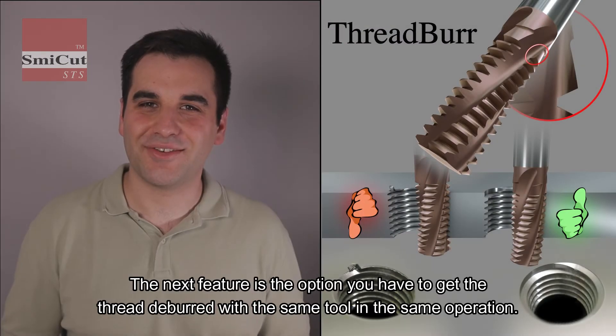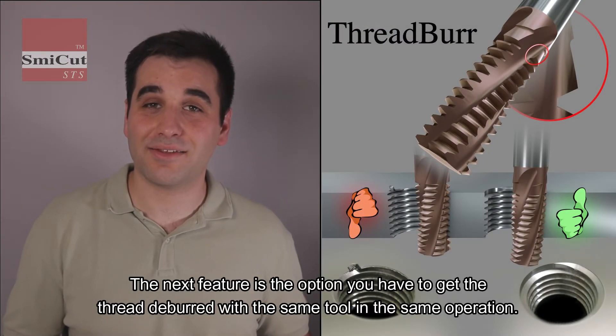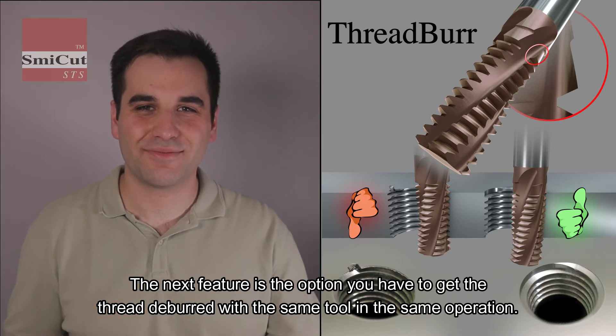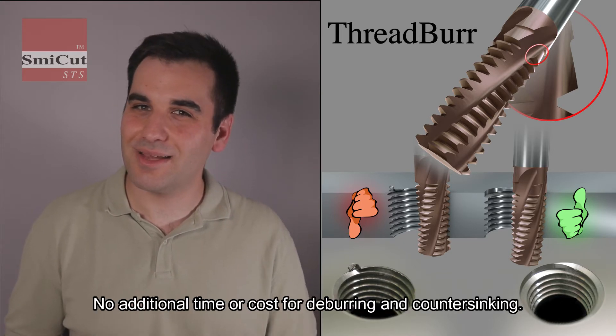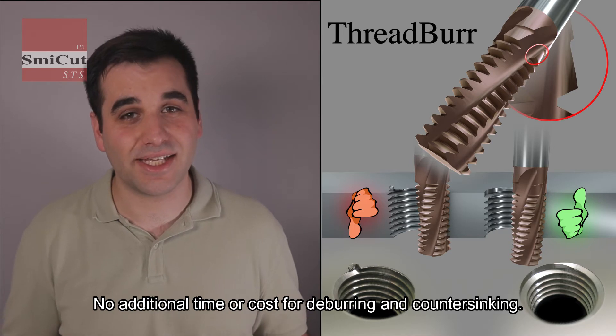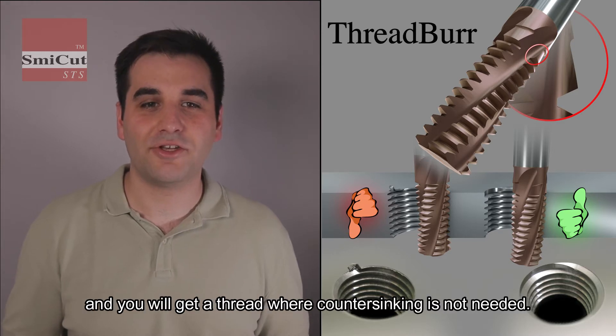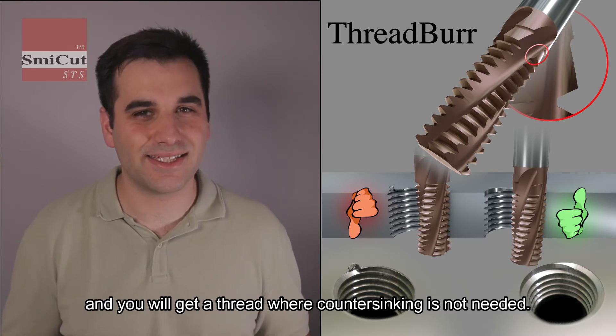The next feature is the option you have to get the thread deburred with the same tool in the same operation. No additional time or cost for deburring and countersinking. The deburring operation is made automatically when thread milling, and you will get the thread where countersinking is not needed.